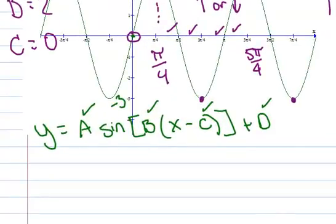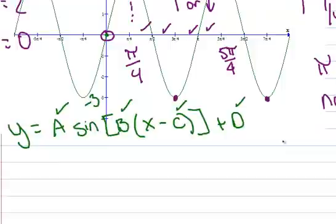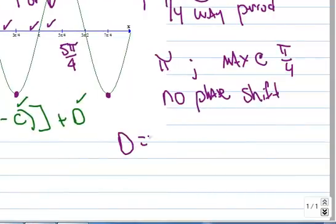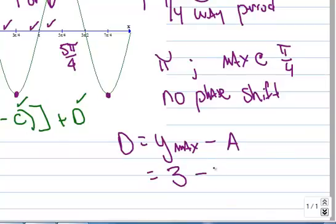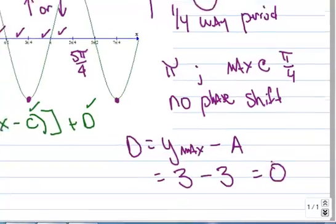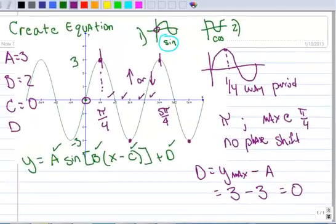And then the last thing we want to do is calculate vertical shift. Well, there's a formula for this. And the formula for vertical shift is d equals the y max minus a. So our y max here was 3. And our amplitude, which we already calculated, is 3. And so d then is 0. So there's no vertical shift.